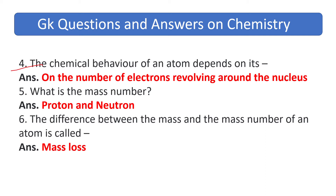The chemical behavior of an atom depends on the number of electrons revolving around the nucleus. What is the mass number? The answer is protons and neutrons. The difference between the mass and the mass number of an atom is called mass defect.